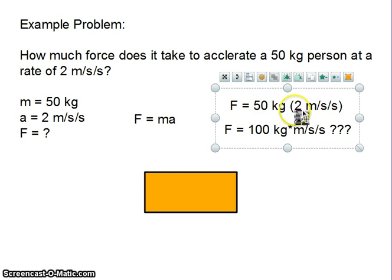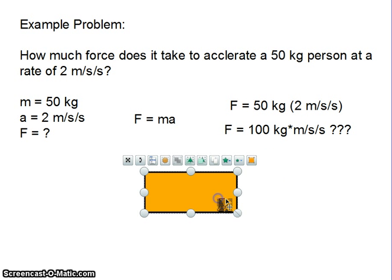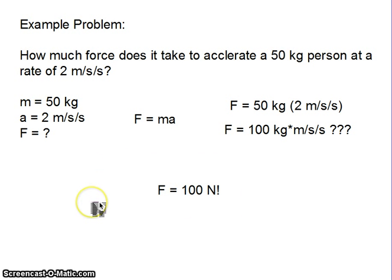Plug in what we know, so F equals 50 kilograms times 2 meters per second per second. 50 times 2 is 100, and then here's all our units, kilogram meters per second per second. That gets really cumbersome, and so physics has a defined unit that we use for force. A kilogram meter per second per second is defined as a Newton, and so that would be 100 Newtons.